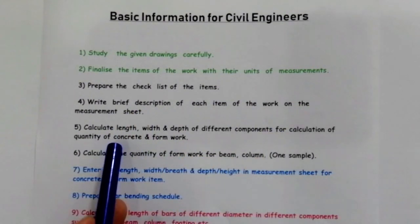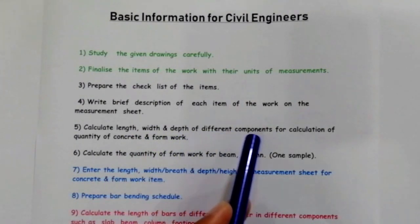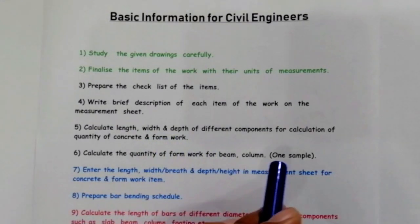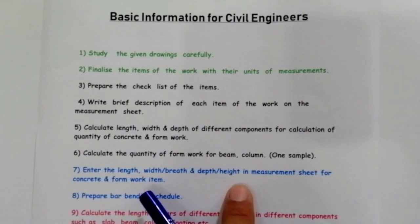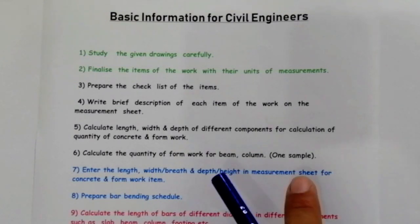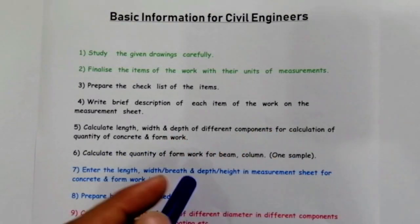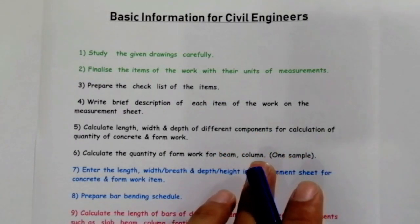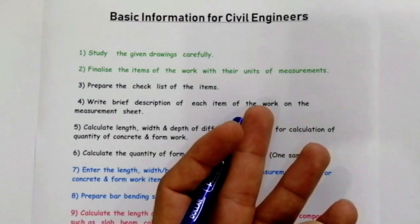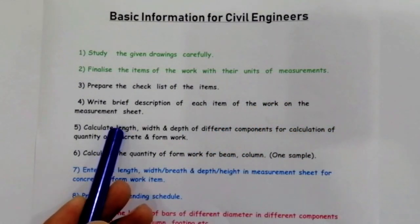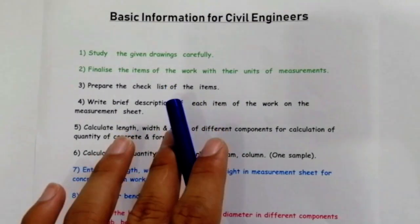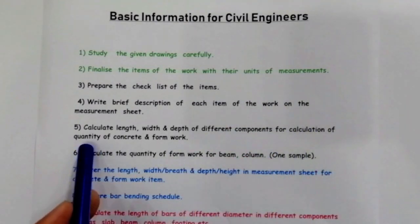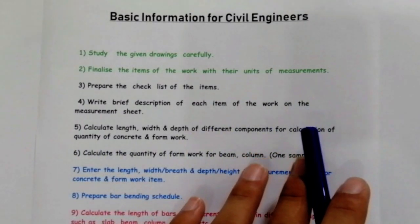The fifth point is: calculate the width and depth of the different components for calculation of quantity of concrete and formwork in building construction works. All quantities depend on the measurements. So you have to check the dimensions — for column, beam, or slab — you have to check length, width, and depth for different components to find their material quantities, such as for concrete or for formwork.